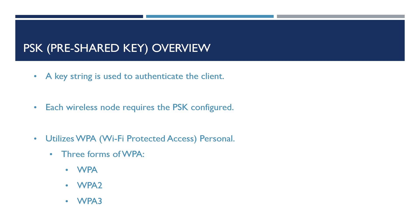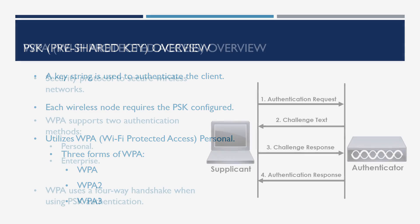WPA1 was superseded by WPA2, which brought increased encryption mechanisms and aimed to provide better security than WPA1. Although WPA2 was considered more secure, a number of vulnerabilities were discovered within it. As such, WPA3 was announced by the Wi-Fi Alliance to address shortfalls with WPA2 and improve overall security. All three standards can still be used, however it's strongly advised to use WPA3 where available.